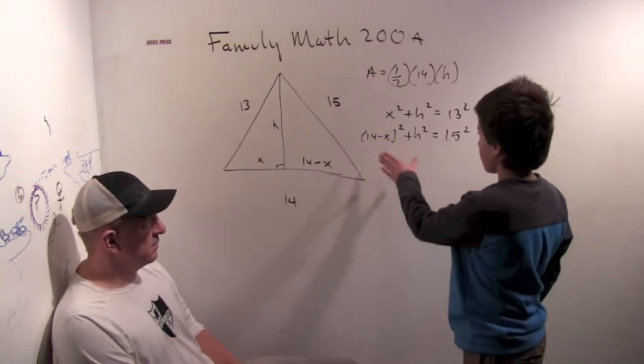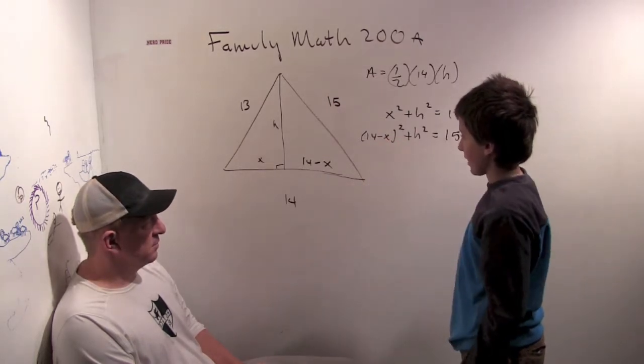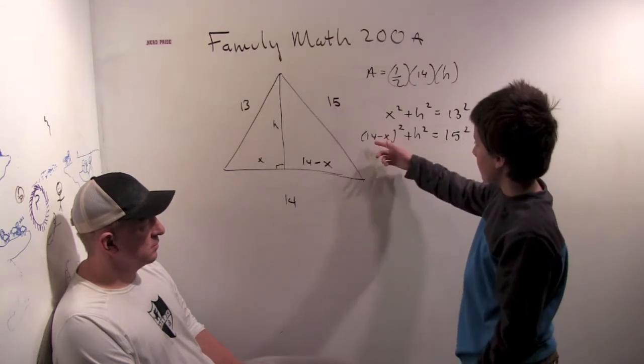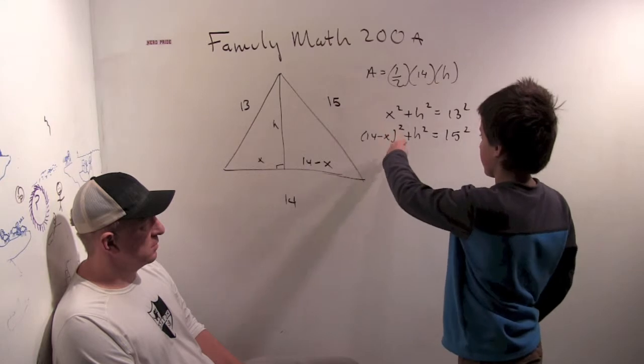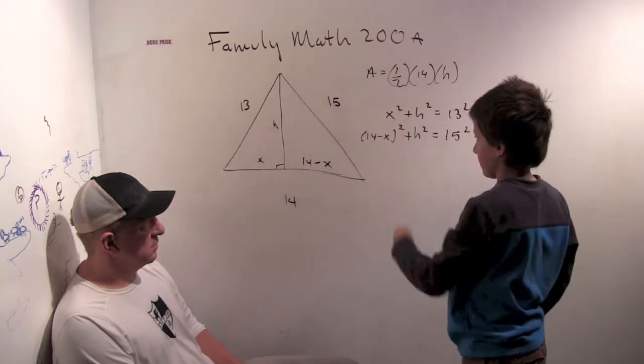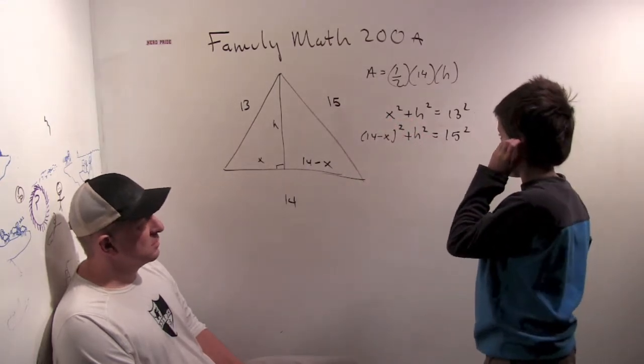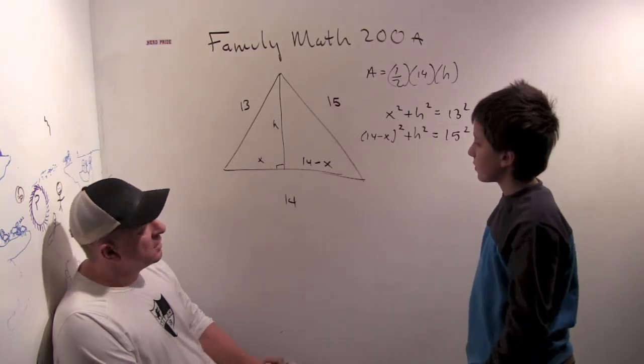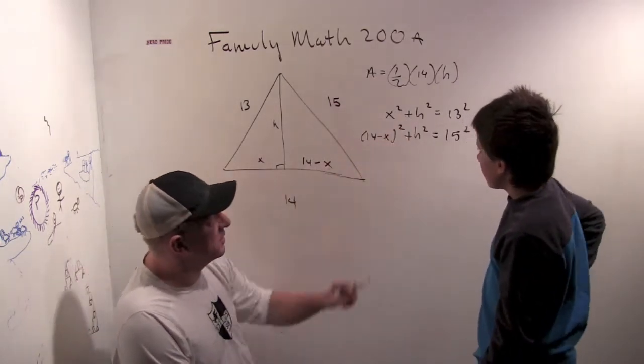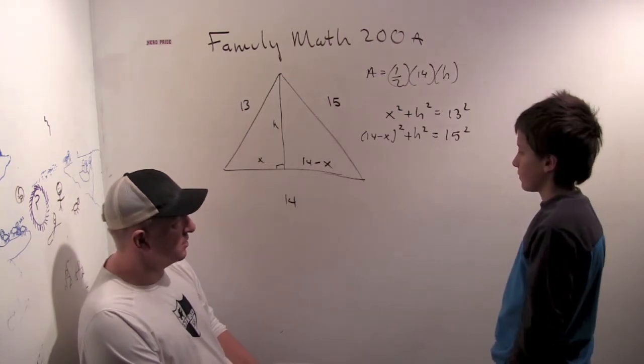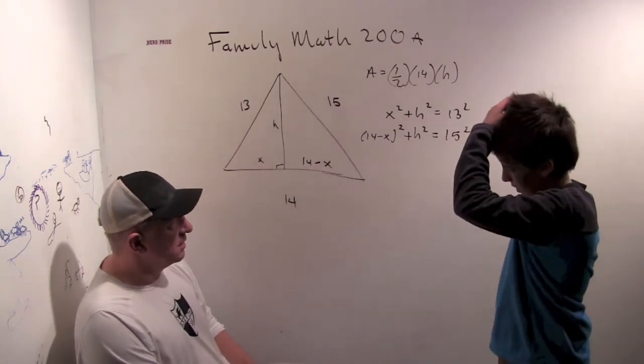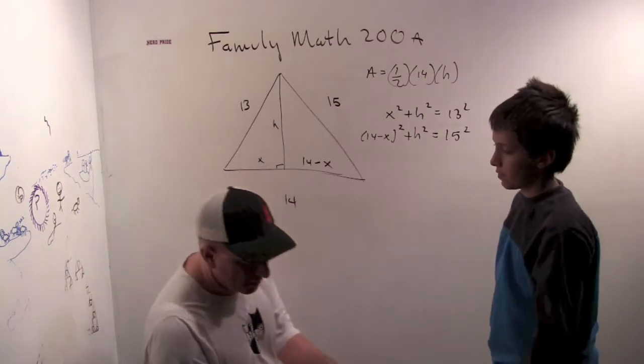Well, because then we've got less to worry about. We can figure out what x is, because when we subtract this from this, we're going to cancel out the x squared and the h. Yeah. So, these equations both have an h squared in them, so it might be actually really interesting to subtract them and just see what happens, right? Yeah. All right. So, let's do that in the next video.